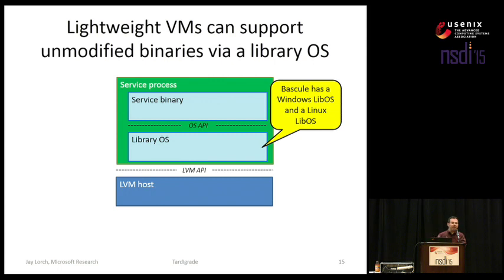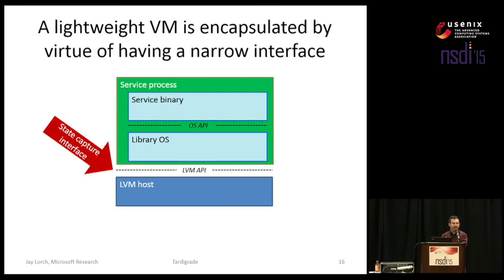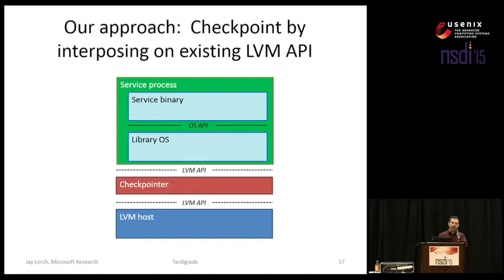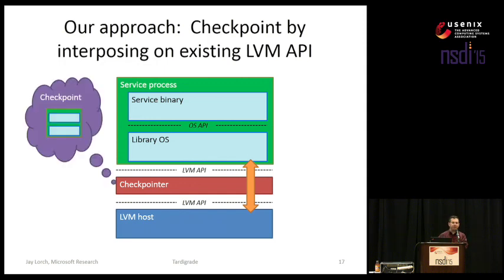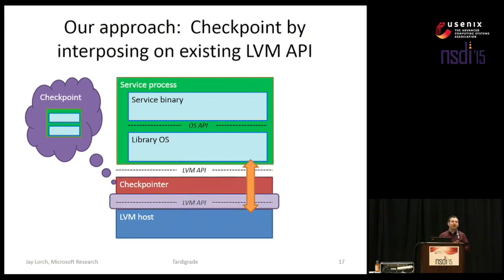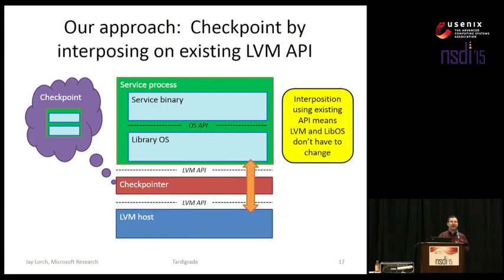We observe that this LVM API is useful not just for security, isolation, and portability, but also as a great interface at which to capture state. We argue that the right way to do checkpointing of a lightweight virtual machine is to interpose on the system call interface between the library operating system and the host. From this vantage point, it has a good view of the internals of the process, so it can capture a snapshot of it as well as a snapshot of the dependencies the guest has on the host, so those dependencies can also be migrated to the backup. By exporting the LVM API to the library OS, we obviate the need to make any changes to the library OS. By consuming the LVM API at the bottom, we obviate any changes to the LVM host. We can take an existing lightweight virtual machine system, write a new checkpointer, and turn it into a substrate that enables replication.